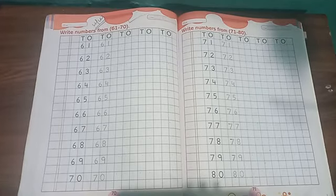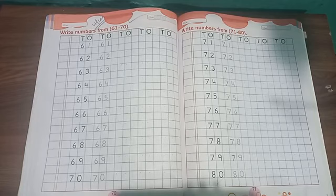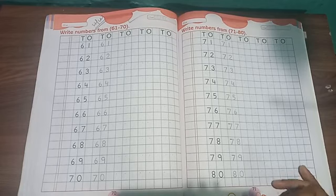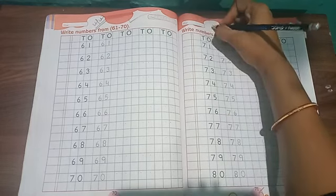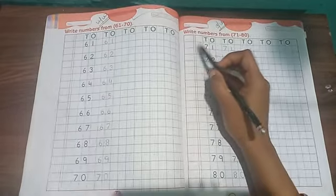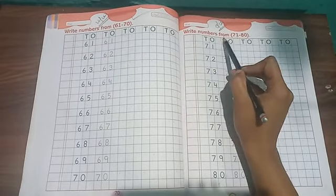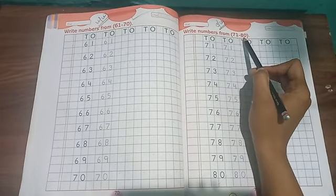Hello LKG students, good morning to all of you. This is your math class, so please take out your math book. Take out page number 71 and write your CW. Now see the topic: write numbers from 71 to 80.